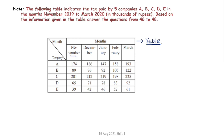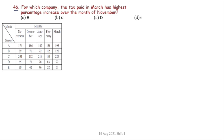First of all, the months are December, January, February, and March. We have companies A, B, C, D, and E. We will talk about manufacturing information. Question number 46: for which company is the tax paid in March the highest percentage increase over the month of November? The options are B, C, D, E — so we will compare the four companies.